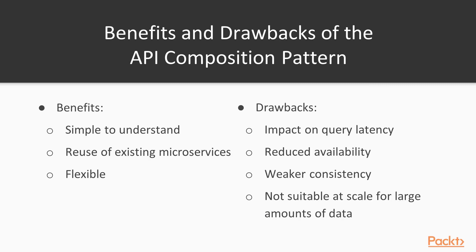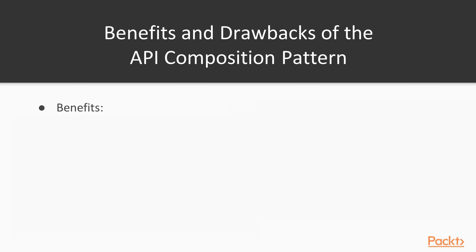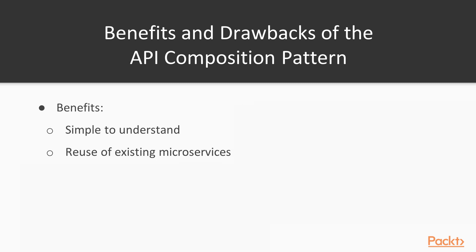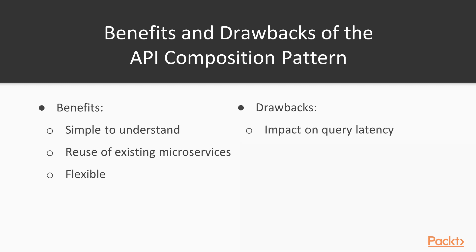The benefits and drawbacks of the API composition pattern: the benefits are that it's very easy to understand, you can reuse your existing microservices and their APIs, and it's very flexible — for example, you can do a join between two different domains. The drawbacks are that it does have an impact on query latency, especially when compared to an SQL database join, which is heavily optimized to join different tables together.